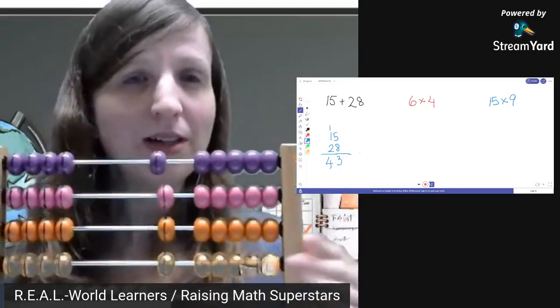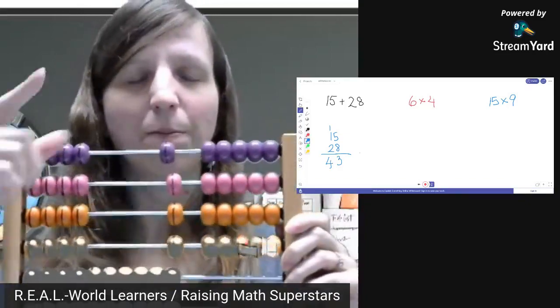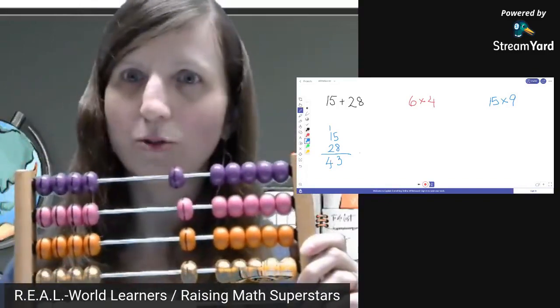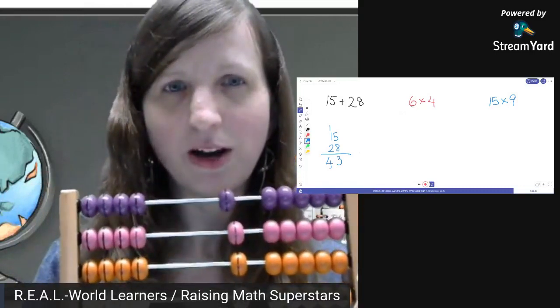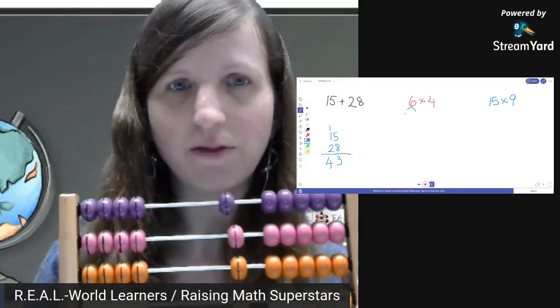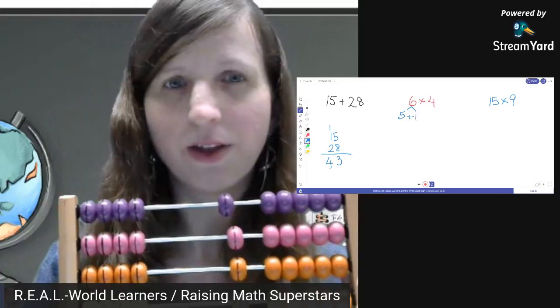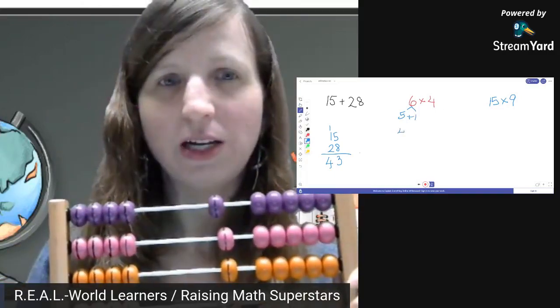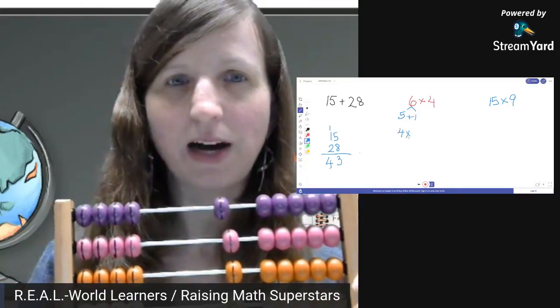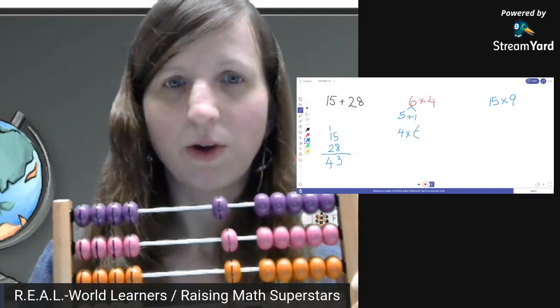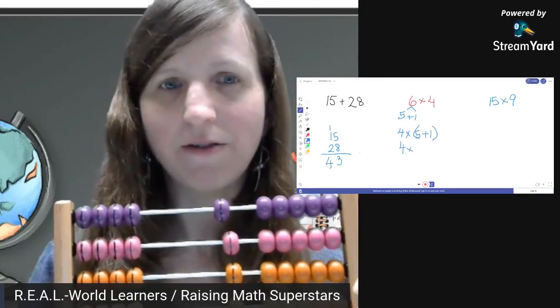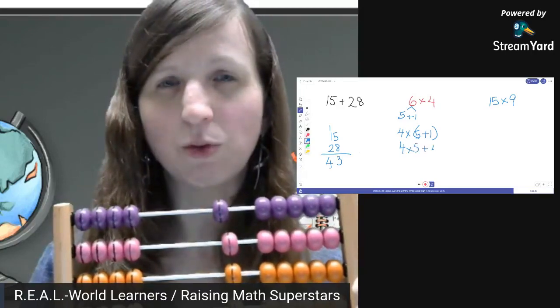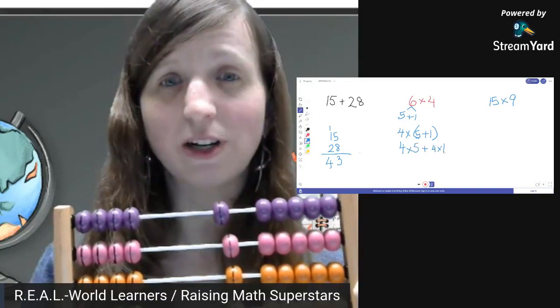And then you can build on that and build to the point where you're using the distributive property. So you know that anytime you have a six, that's actually a five and a one. So what we're really doing here is four times five, we can say four times five plus one. So you have four times five plus four times one. This is an excellent introduction to algebra.